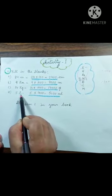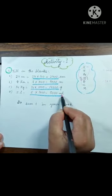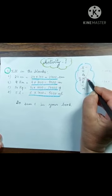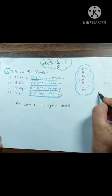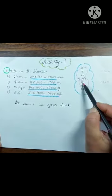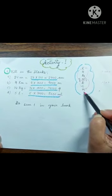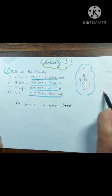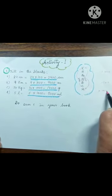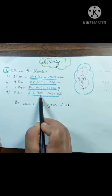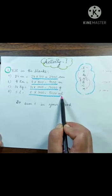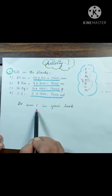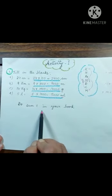5 liters given, convert to milliliters. Lady — liters to milliliters. Bigger to smaller means multiply. Three steps down, multiply by one thousand. 5 multiplied by 1000 equals 5000 milliliters. Now do sum number one in your book.